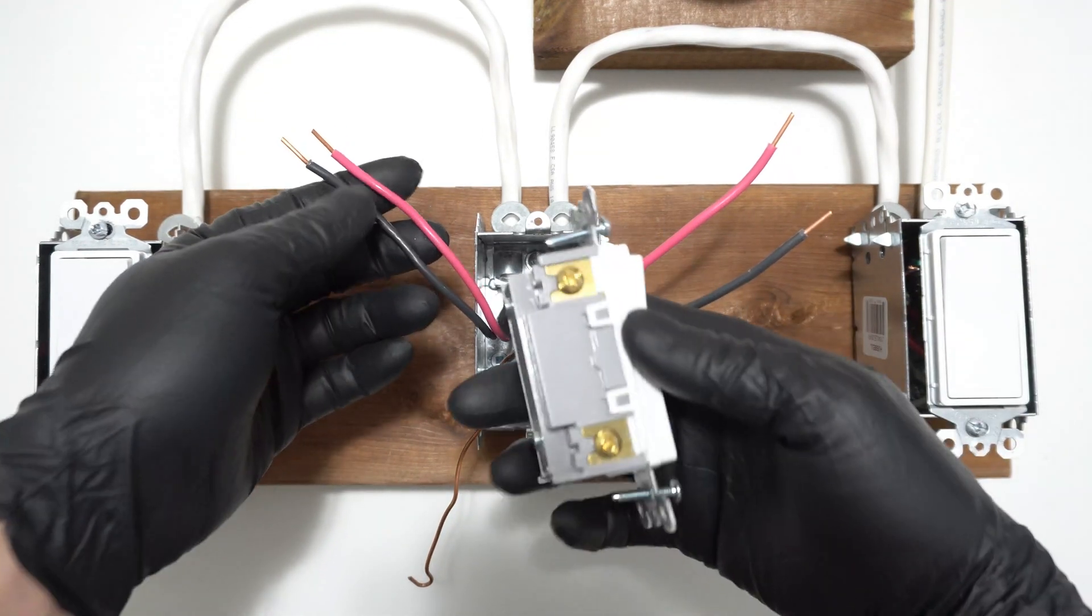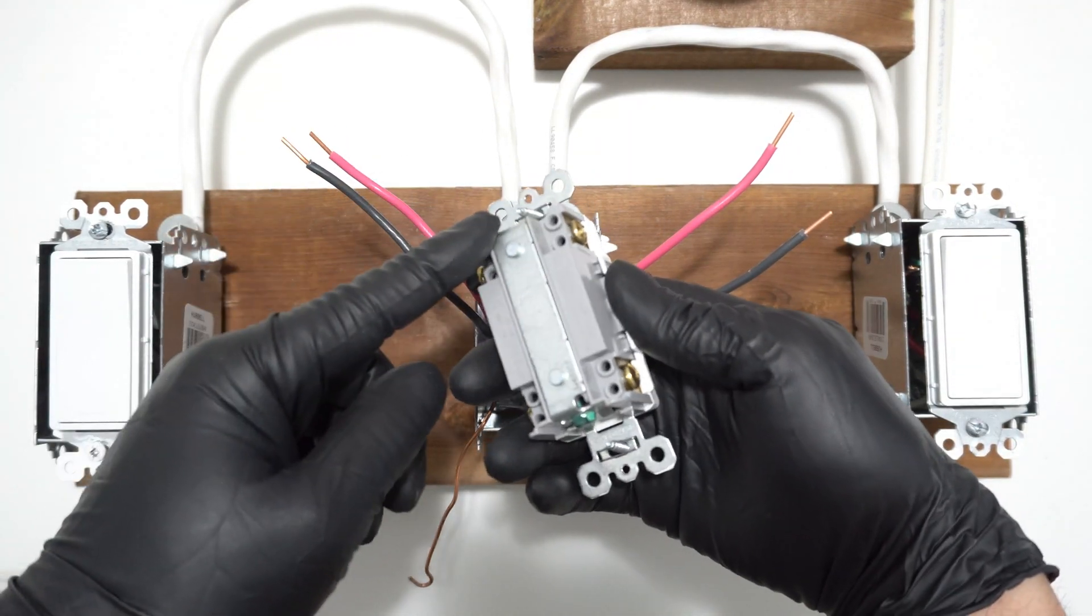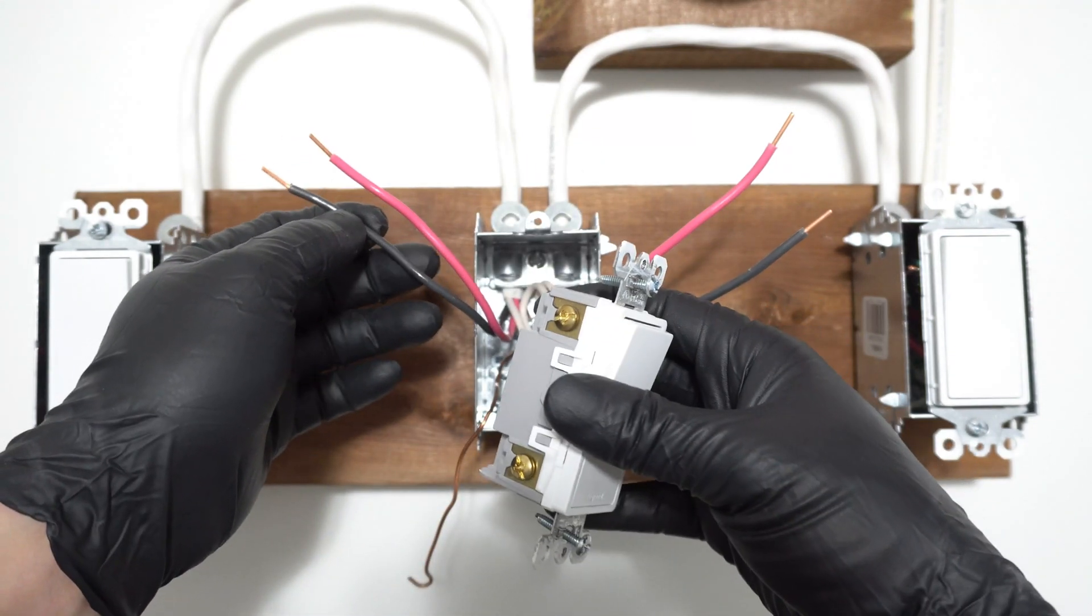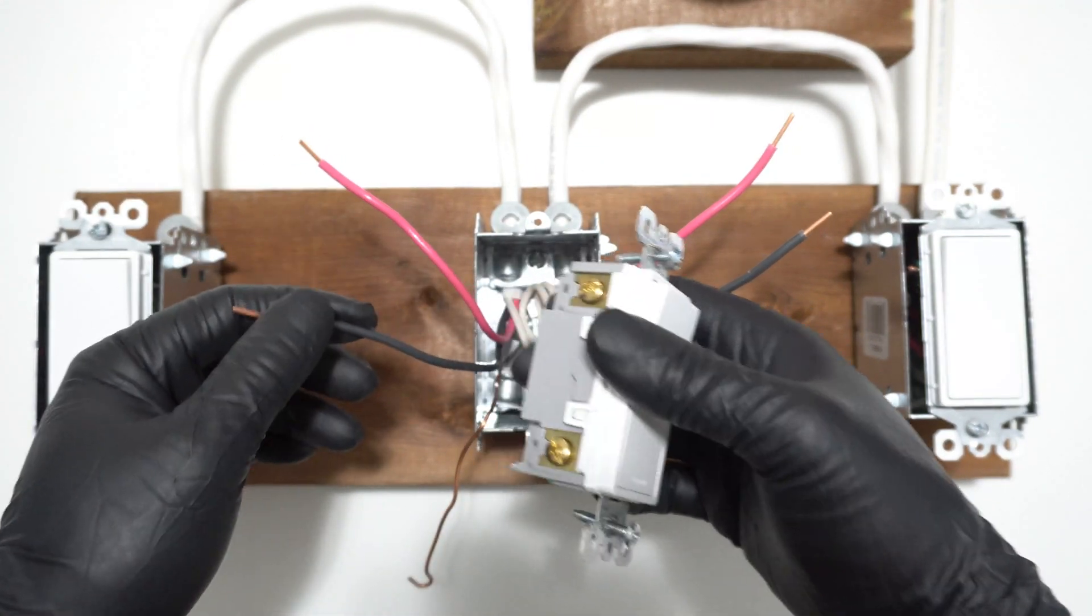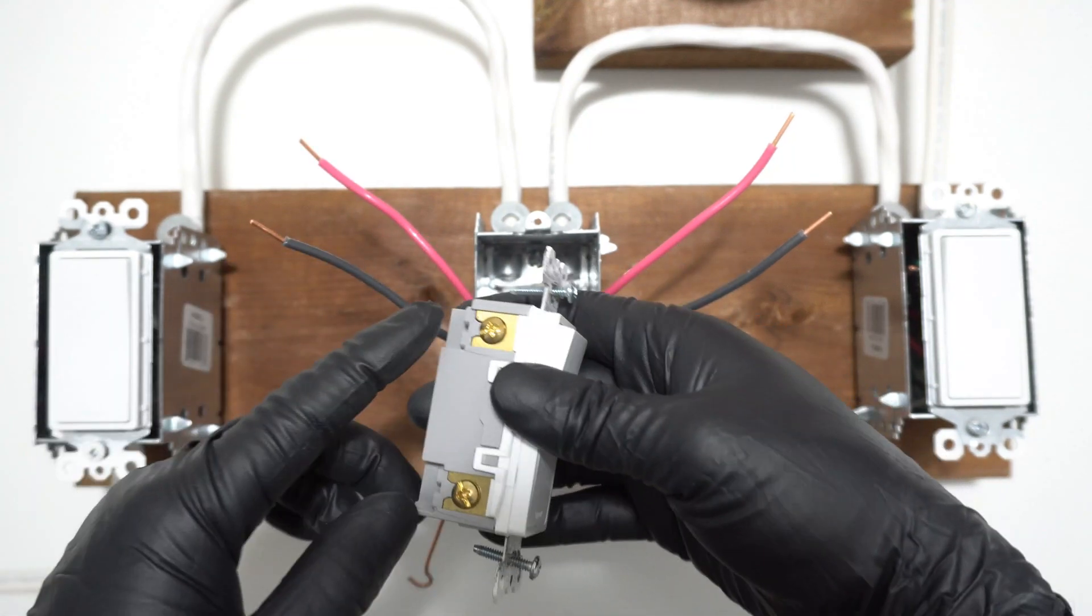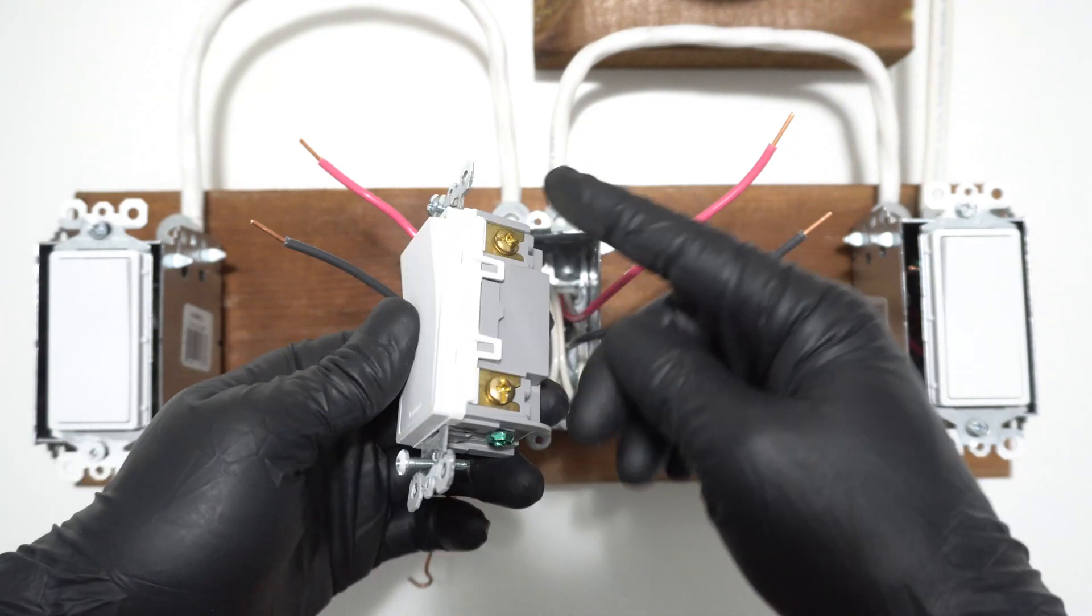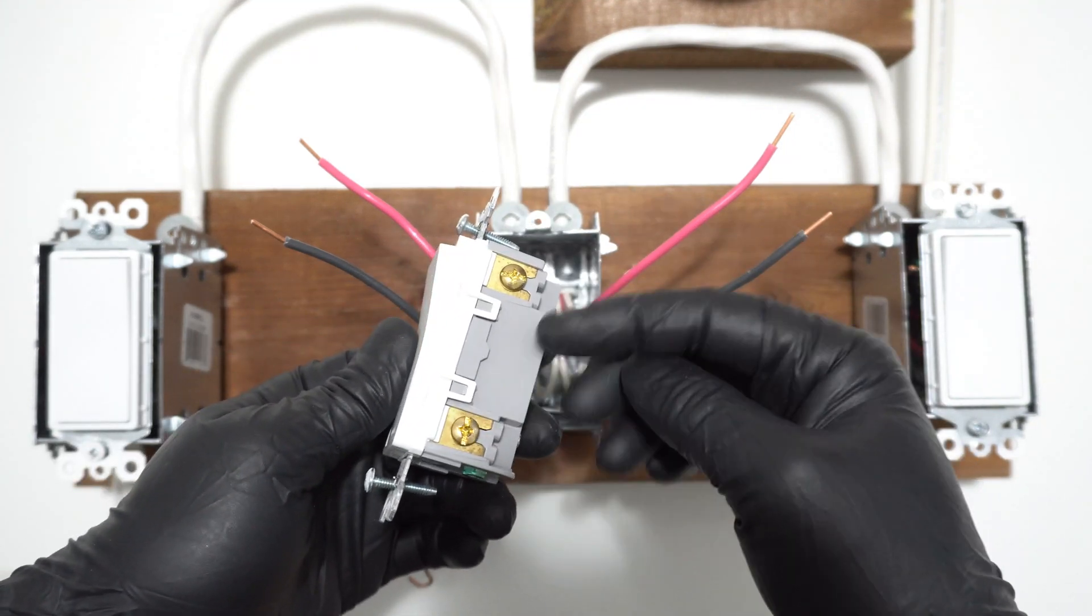Now we are left with these four wires. This red, black, it doesn't matter if you want to put it on the top or bottom. But we will have to put the same colors on each side. This side has to be all blacks and this side has to be all red. You cannot mix and match.